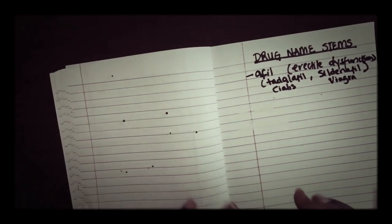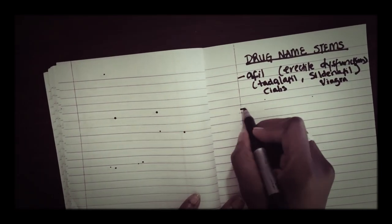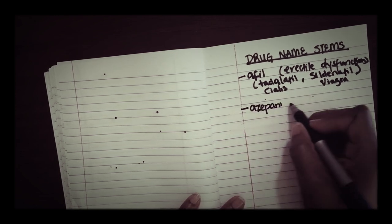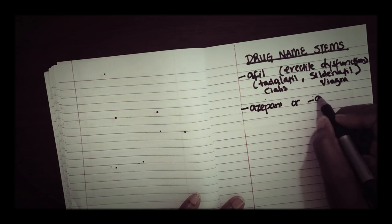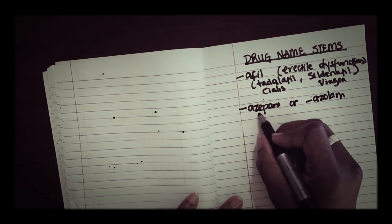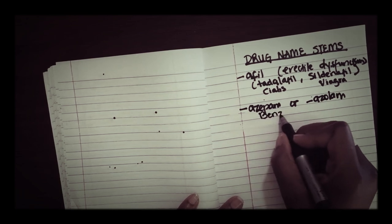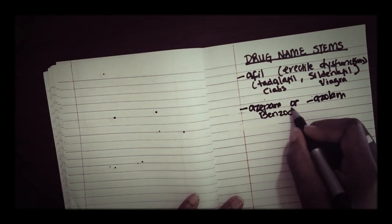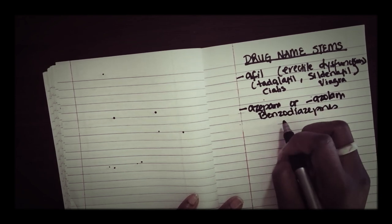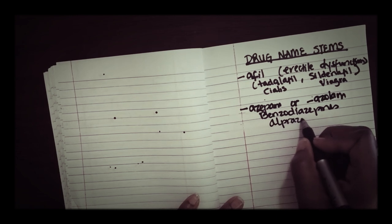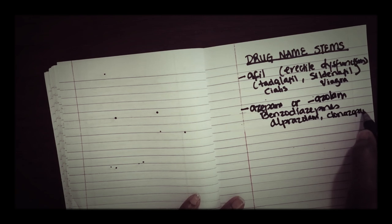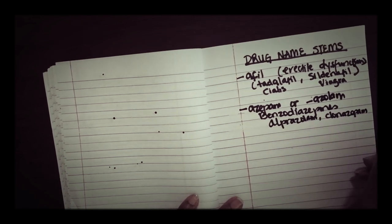Then we have drugs that end in -azepam or -azolam. These are our benzodiazepines, benzos we call them. Examples are alprazolam, clonazepam, and so forth. These are used to treat anxiety, insomnia, and seizures.